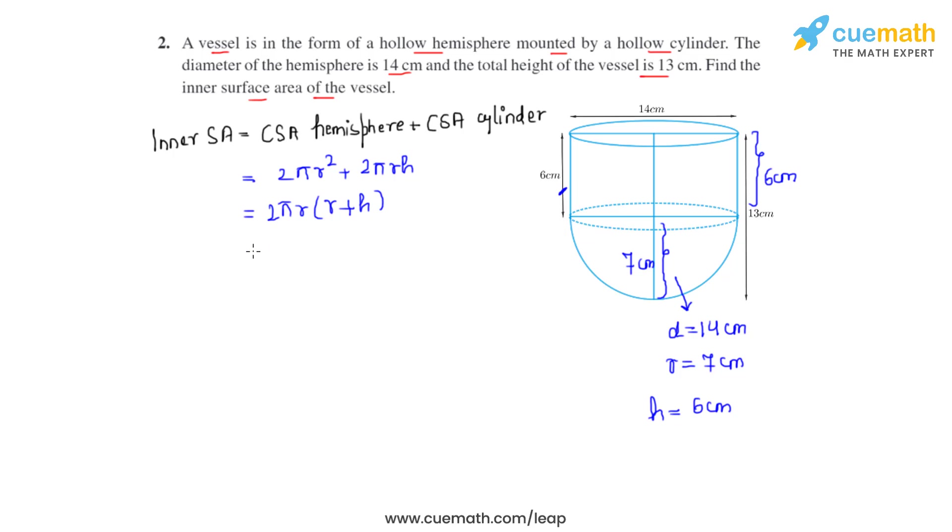Now let's substitute the values as we have got it from the question. So 2 times 22/7 times 7 times (7 plus 6) centimeter square. 7 and 7 gets cancelled. 2 times 22 gives us 44. 7 plus 6 gives us 13. So 44 times 13 centimeter square. On multiplying 44 and 13 we get the product as 572.